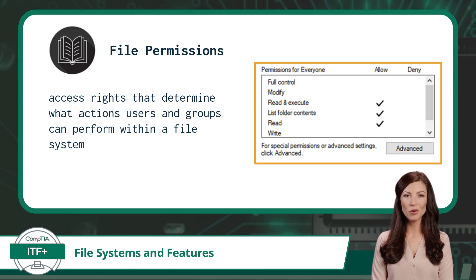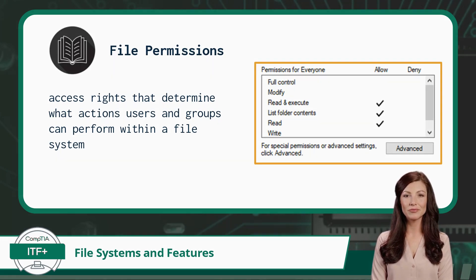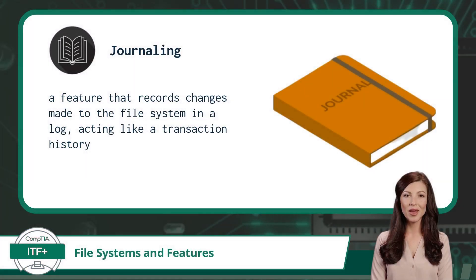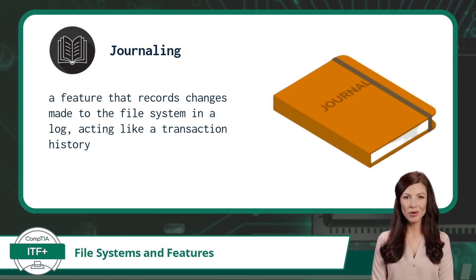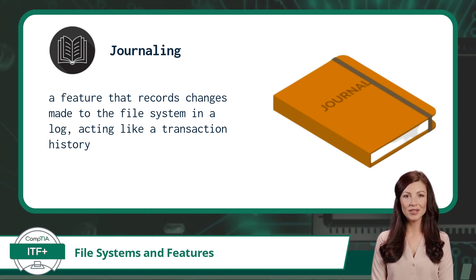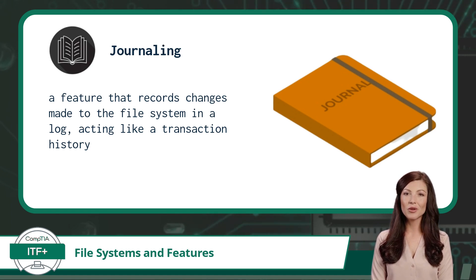Full control is exactly what it sounds like — this permission provides a user full control over the file. Our next feature is journaling, which records changes made to the file system in a log, acting like a transaction history. It helps ensure data integrity during unexpected events like power outages or system crashes without losing data or corrupting files.